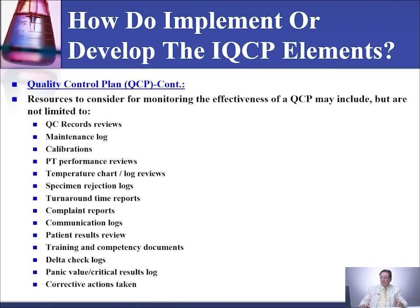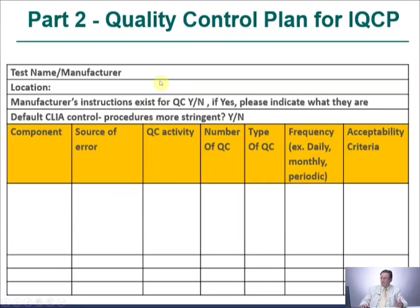The resources for the quality control plan that you need to consider for monitoring its effectiveness may include, but are not limited to: QC records, maintenance log, calibration, PT, temperature chart, specimen rejection chart, turnaround time report, complaint report, communication log, patient result review, training and competency documentation, delta check log, panic result log, and corrective action taken. There is also a form from CAP that you could use for that purpose.